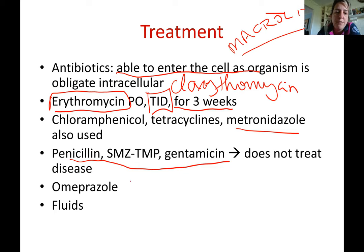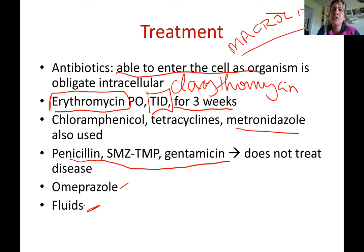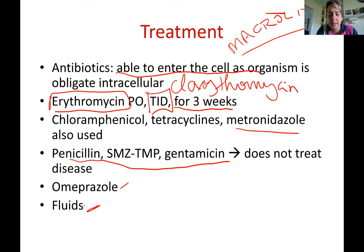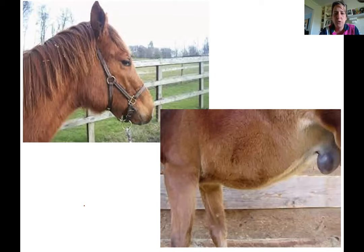Supportive care includes omeprazole to prevent gastric ulcers, and fluids. For horses with significant edema, plasma from a normal horse or hyper-colloidal fluids are given to draw liquid back into the vasculature and reduce edema from the legs and extremities. This is necessary because low protein inside the vascular compartment is a serious problem in these cases.